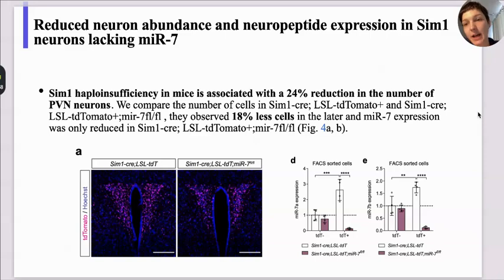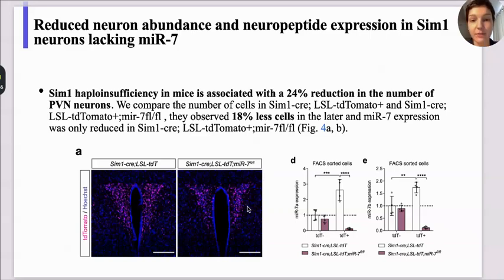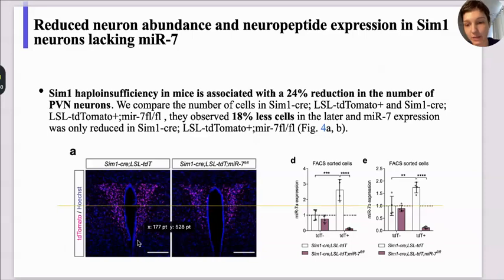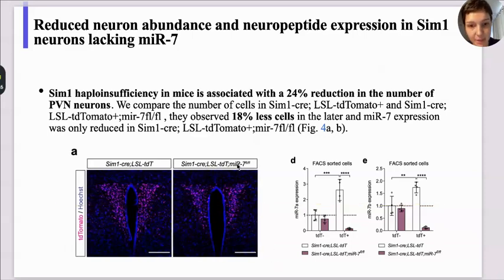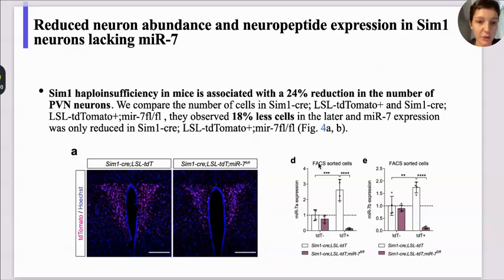It is known that SIM-1 haploinsufficiency in mice is associated with a 24% reduction in the number of paraventricular nucleus neurons. So they examined whether in their model there is also a decrease in the number of cells. They analyzed tdTomato fluorescence as an indicator of Cre function. In control mice the signal is robust, while in the microRNA-7 floxed mice they observe a decrease of tdTomato-positive cells. They performed both qualitative fluorescence analysis and quantitative flow cytometry analysis, observing 18% fewer cells in the microRNA-7 floxed animals.